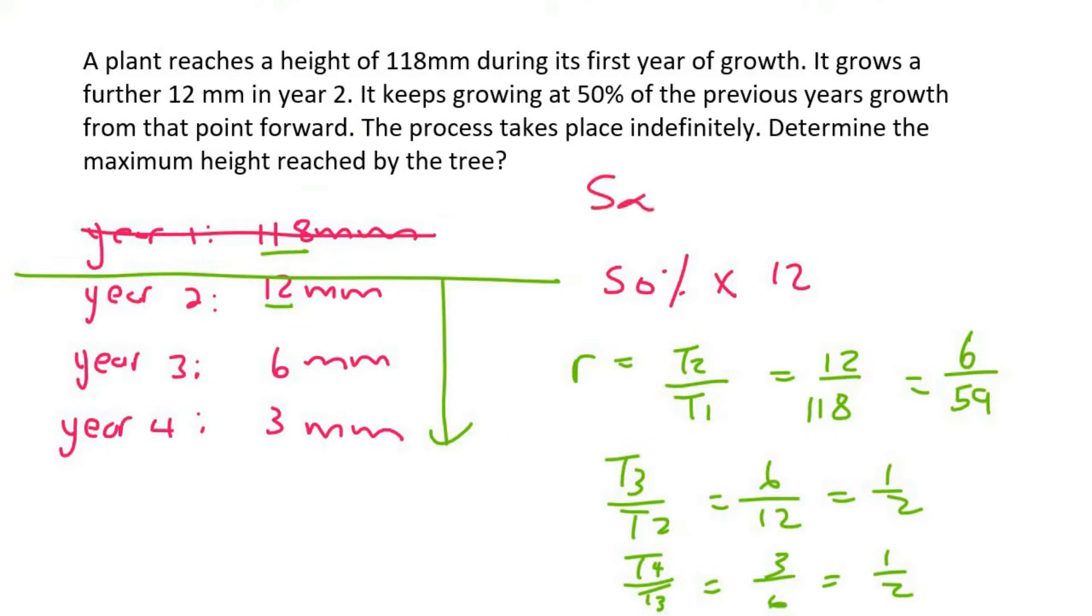And we use the sum to infinity because we don't know how many years the tree is going to grow for. It says it takes place indefinitely. Now, a is going to be 12 because we're not using this one. So it's going to be 12 over one minus the ratio which is a half. And so this is going to give us 24.